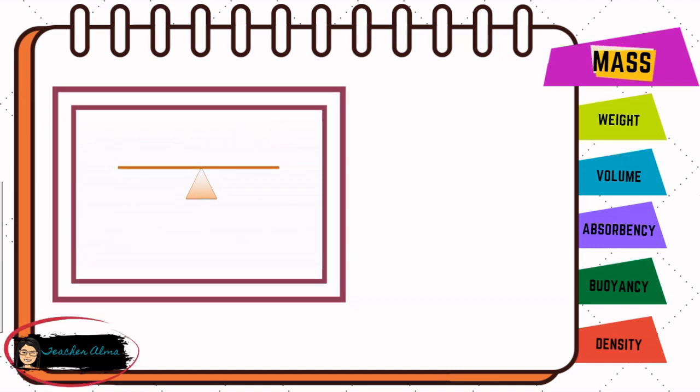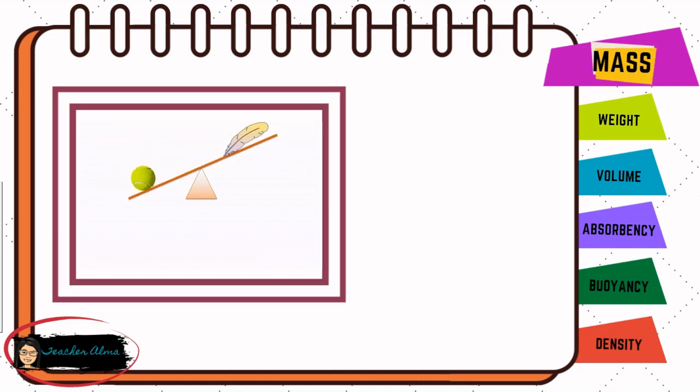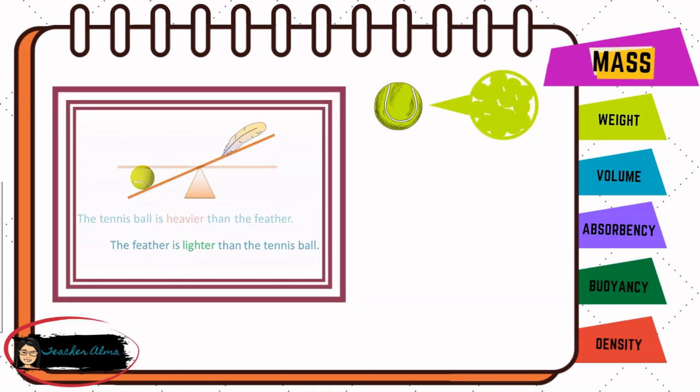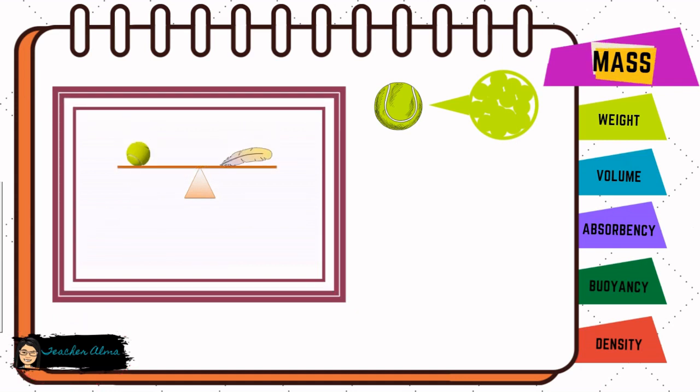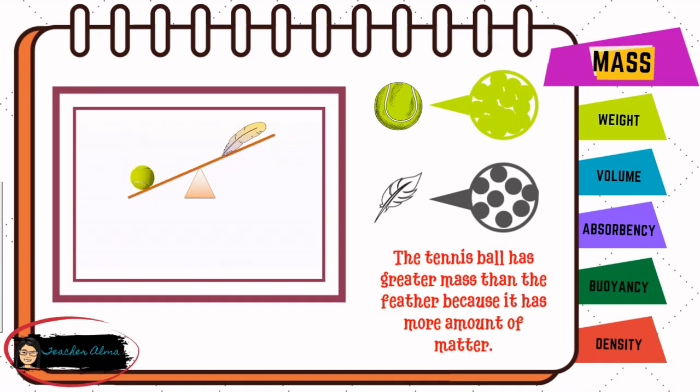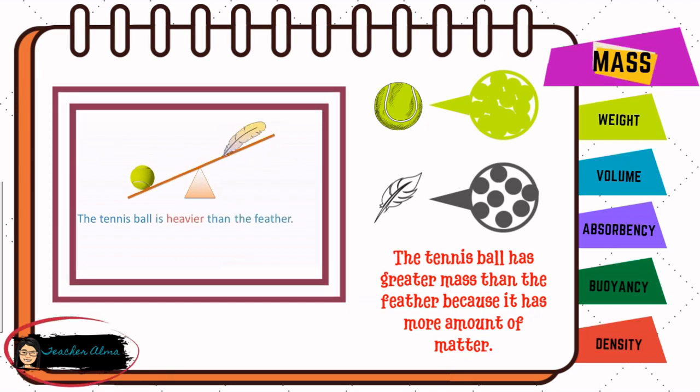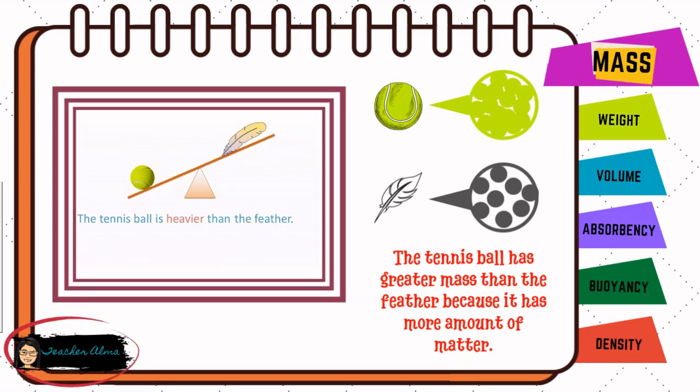Let us take a closer look at the amount of matter in each object. Let us say that this is the amount of matter in the tennis ball. The tennis ball has greater mass than the feather because it has more amount of matter inside it compared to the amount of matter in the feather.